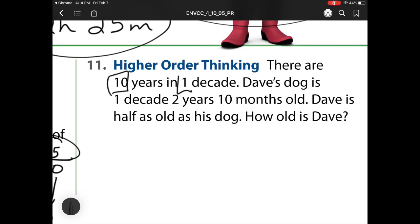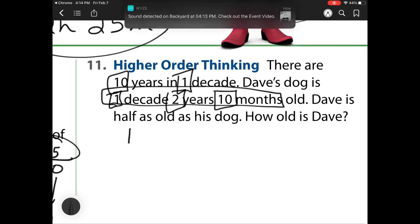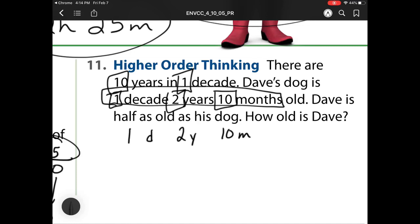There are 10 years in one decade. Dave's dog is one decade and two years and 10 months old. Dave is half as old as his dog. How old is Dave? First, I need to figure out how many months old Dave's dog is. So I have one decade, two years, 10 months. I know that one decade is equal to 10 years. So I have 10 plus this 2. So 10 years plus 2 years is 12 years and 10 months. And now how do I get from years to months? I know there are 12 months in a year. So in order for me to regroup it, I need to do 12 times 12. 12 times 12 is 144. So I have 144 months added to those 10 months. So that's 154 months.